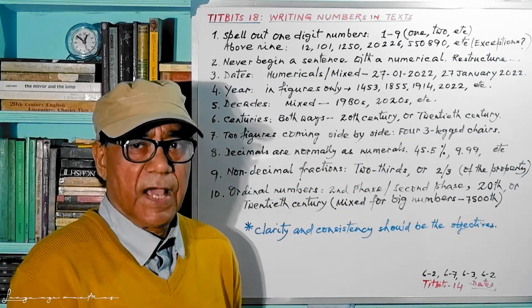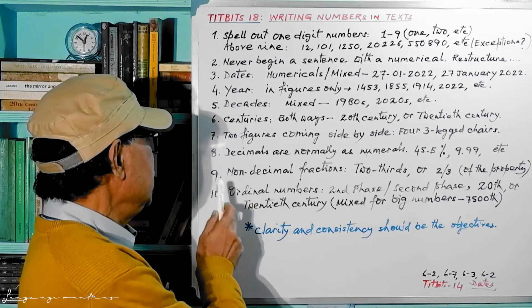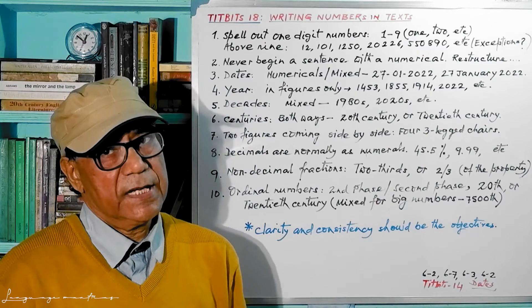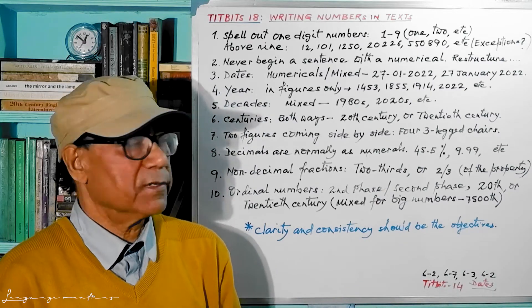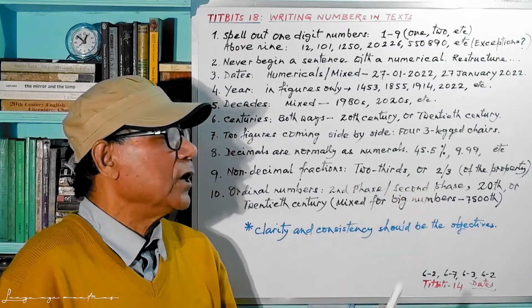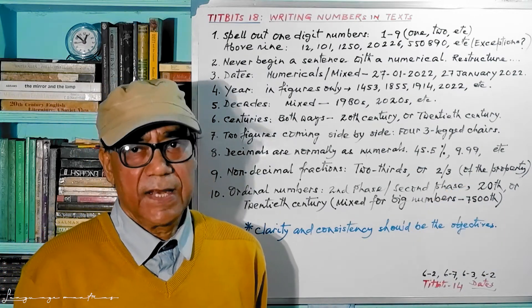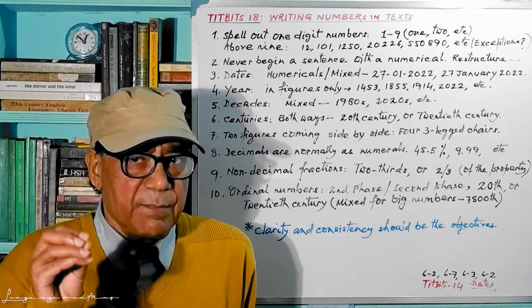Now come to the next one: decimals are normally as numerals. Decimals are always numerals, like 45.5 percent or 9.99, etc. You write like a mathematician. There is no other option here.